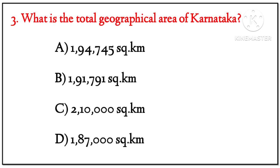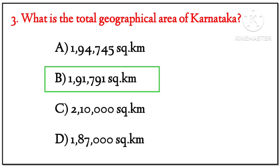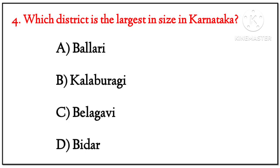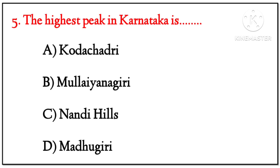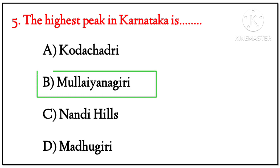Question 3: What is the total geographical area of Karnataka? The correct option is B — 1,91,791 square kilometers. Question 4: Which district is the largest in size in Karnataka? The correct option is C — Belagavi. Question 5: The highest peak in Karnataka is? The correct option is B — Mullayyanagiri.